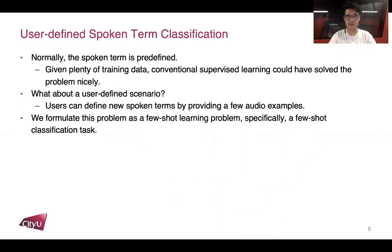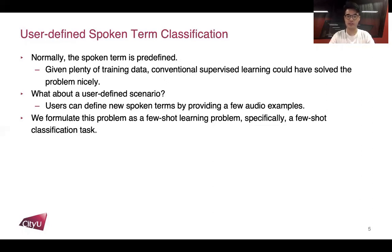Normally, the spoken terms are predefined, and given plenty of training data, conventional supervised learning algorithms could solve this problem nicely. But what about a user-defined scenario, where users can define new spoken terms by themselves but can only provide a few audio examples for each new spoken term? This means the system should be able to recognize new terms with only a few examples, which is quite challenging. We formulate this problem as a few-shot learning problem, specifically a few-shot classification task.